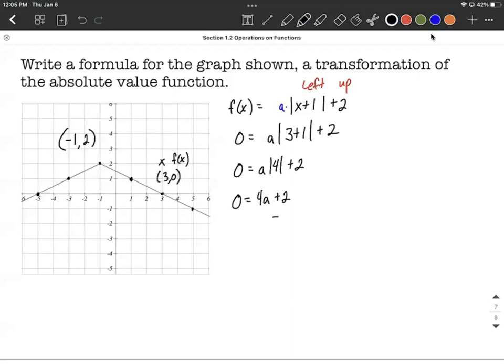Now, the rest of this solving down shouldn't be too bad. We'll subtract 2 from both sides and divide both sides by 4.